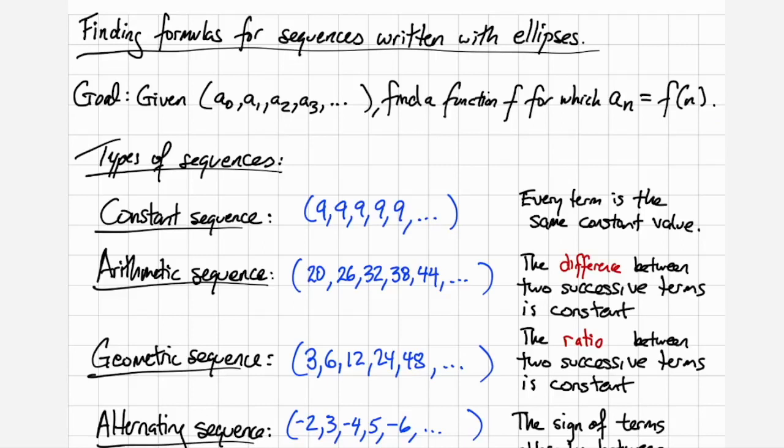Hi, welcome back. In this video we'll be talking about finding formulas for sequences that have been written out using ellipses. You're given some sequence a sub 0, a sub 1, a sub 2, dot dot dot, and you'd like to find a function where a sub n is equal to f of n.